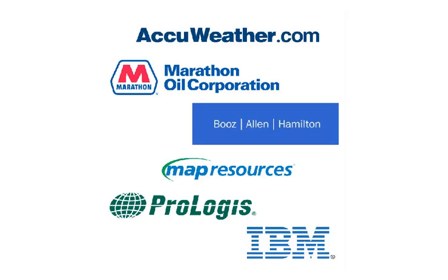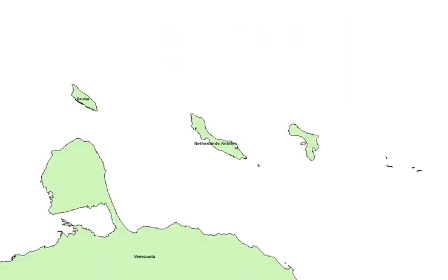Many of our customers depend on our product to be up to date. When looking at these administrative boundaries, you can see all of the countries — Aruba, Venezuela, and the Netherlands Antilles. In 2010, the Netherlands Antilles dissolved into several different countries, including Curacao. So our administrative boundaries have changed.